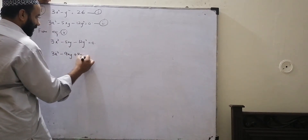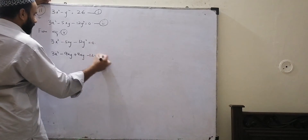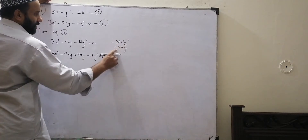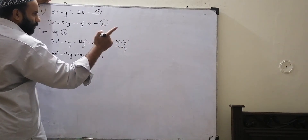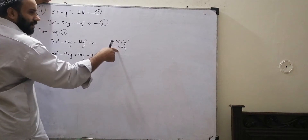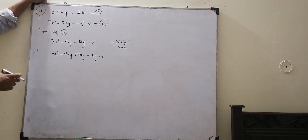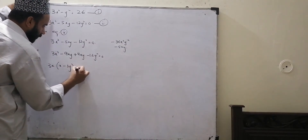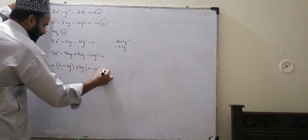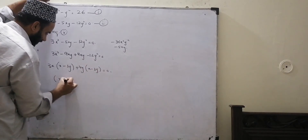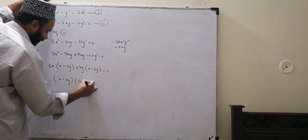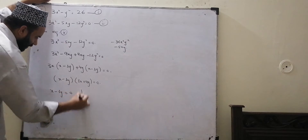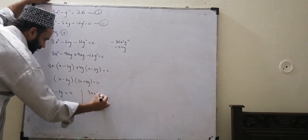We have minus 9x and plus 4x terms. Multiplying the extremes gives minus 36x squared y squared, and the middle term is minus 5x squared. Factoring gives us the factors: x minus 3y equals zero and 3x plus 4y equals zero.